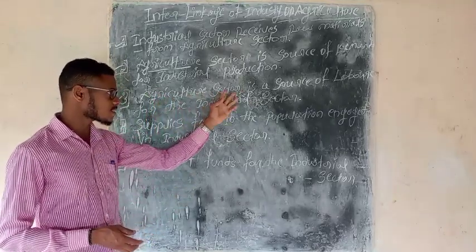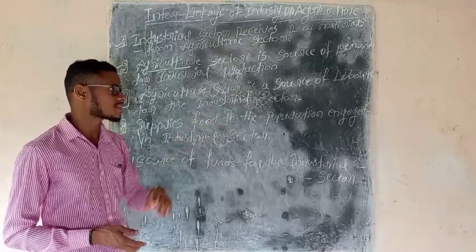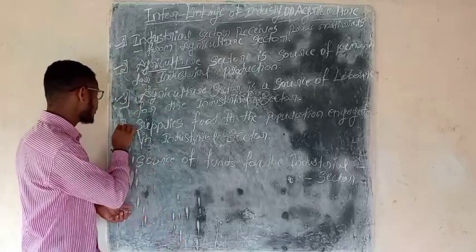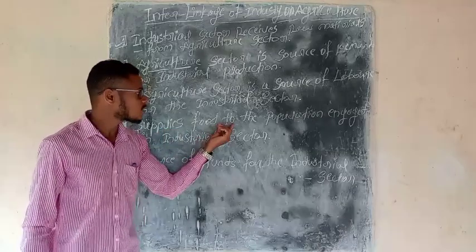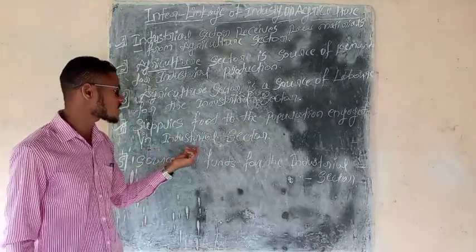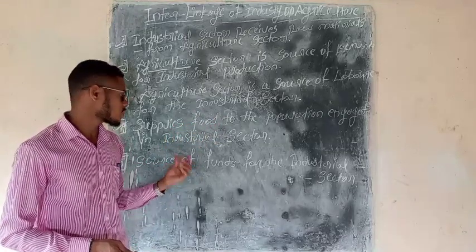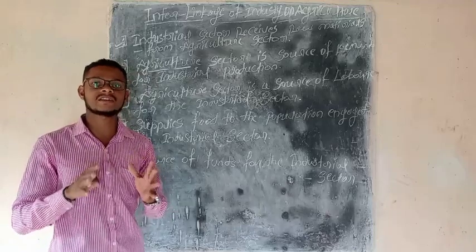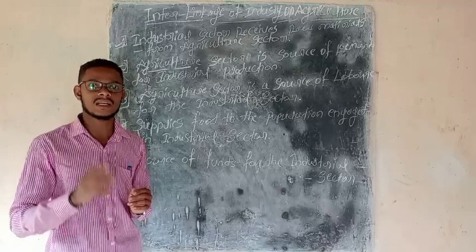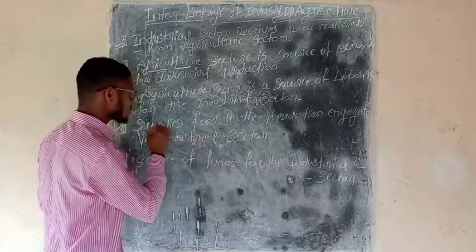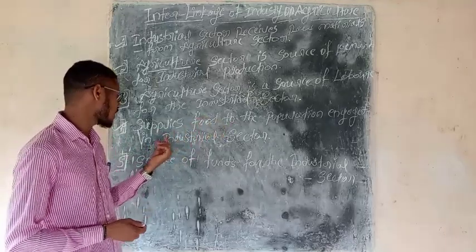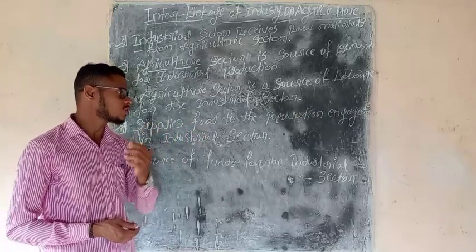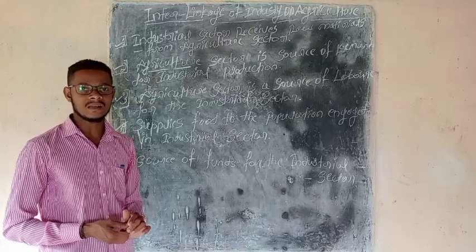The agriculture sector is the source of labor for the industrial sector. Point number four: agriculture supplies food to the population engaged in the industrial sector. The agriculture sector is the source of labor.